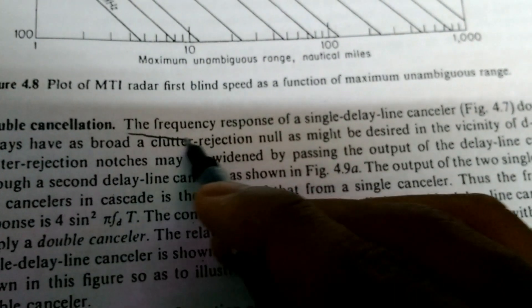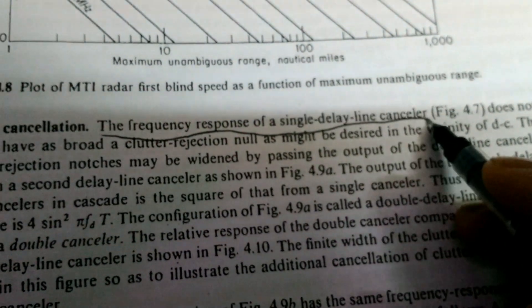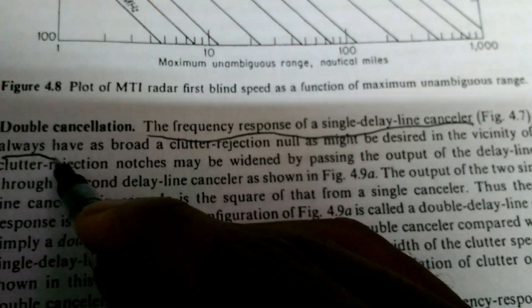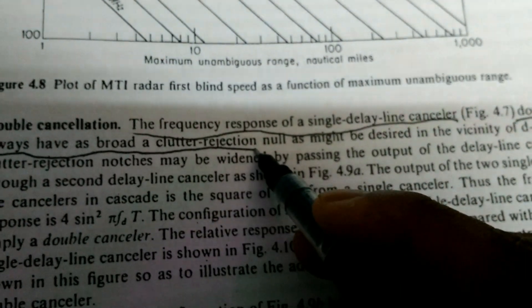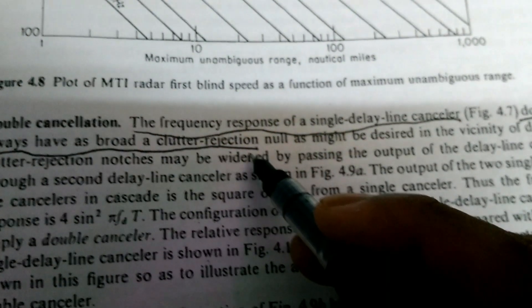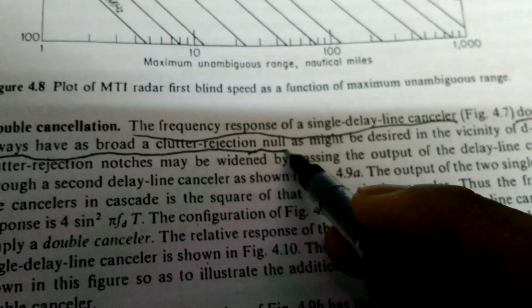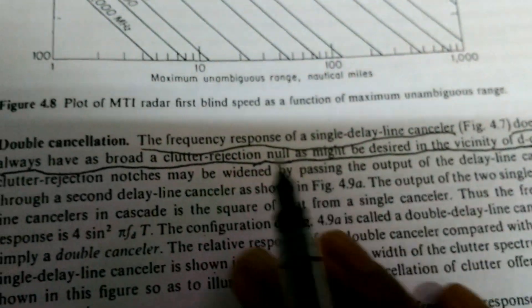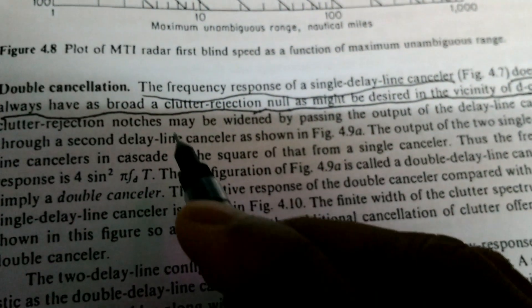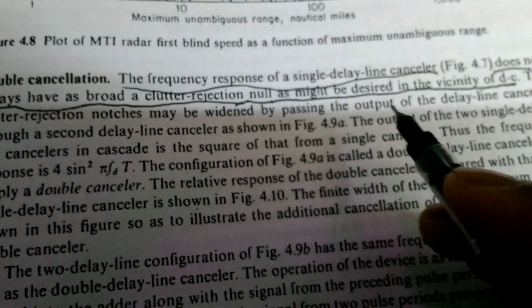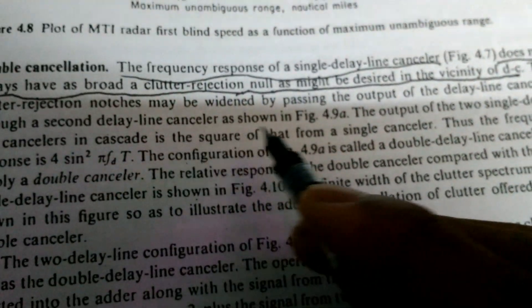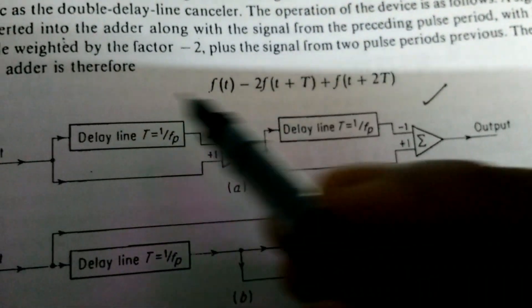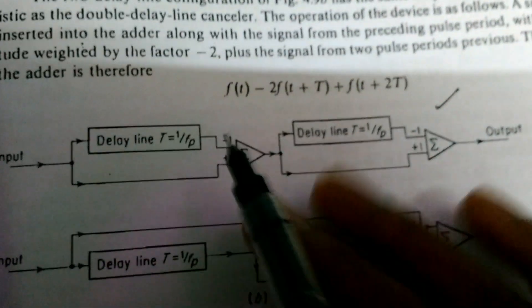The frequency response of a single delay line canceller does not always have as broad a clutter rejection — clutter means stationary target rejection — as might be desired in the vicinity of DC. The null (zero) response may not be wide enough. This clutter rejection can be widened by passing the output of the delay line canceller through a second delay line canceller.